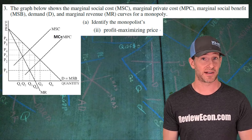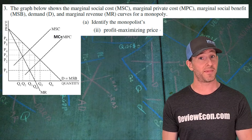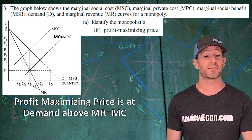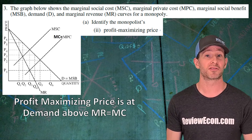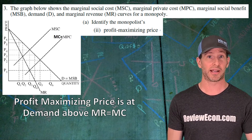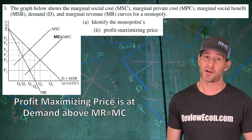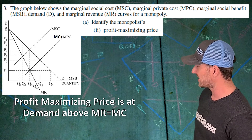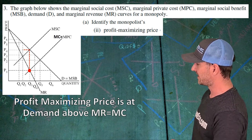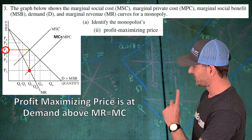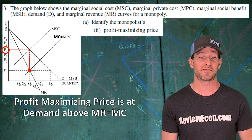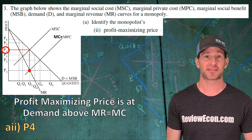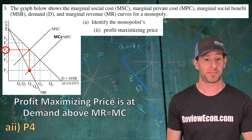The next question asks us to identify the profit maximizing price for this monopoly. Like other monopolies, they get the price from the demand curve above the marginal revenue equals marginal cost point. From our profit maximizing quantity of Q3, head up until you hit the demand curve, then over to the price axis, and that gives us P4 as our profit maximizing price.